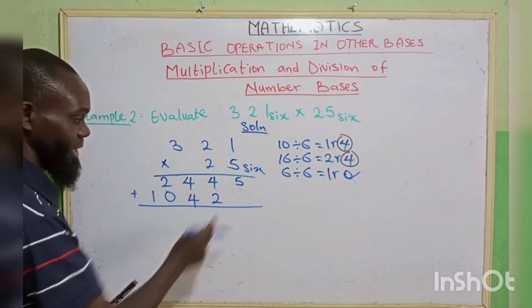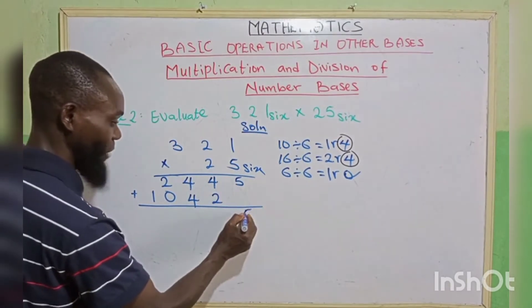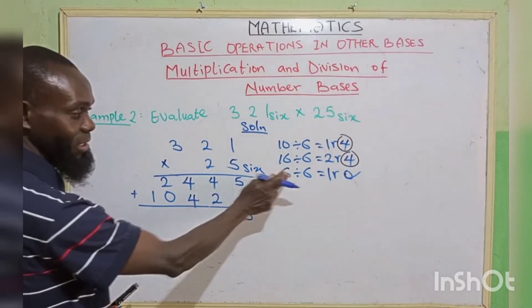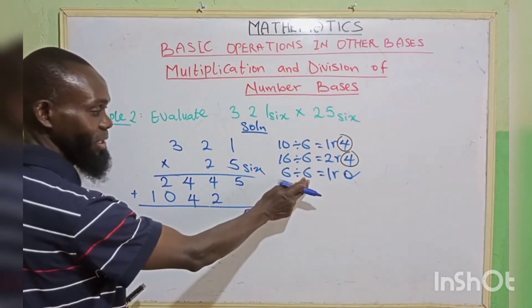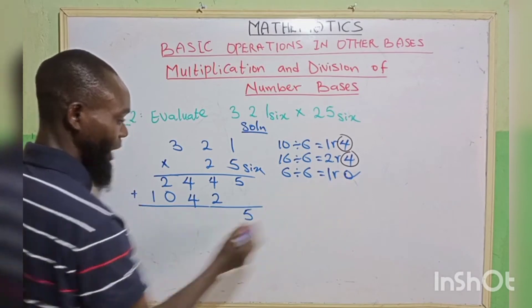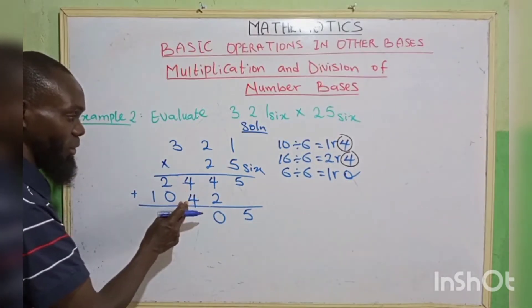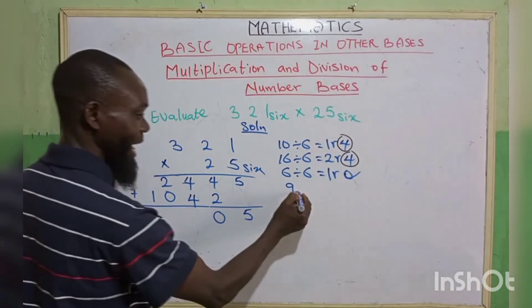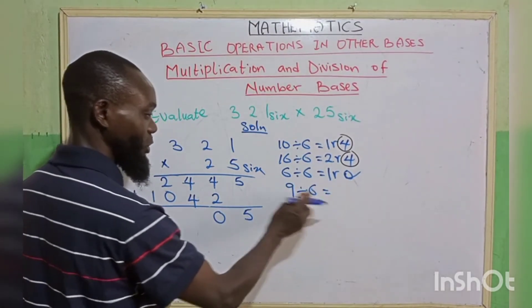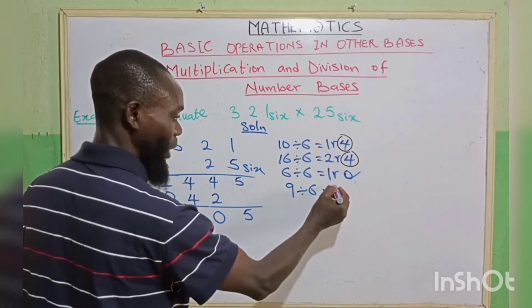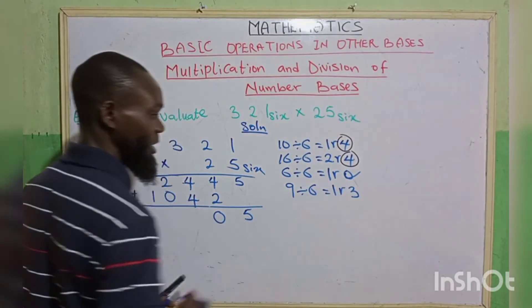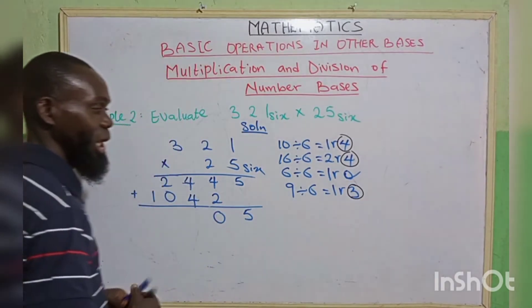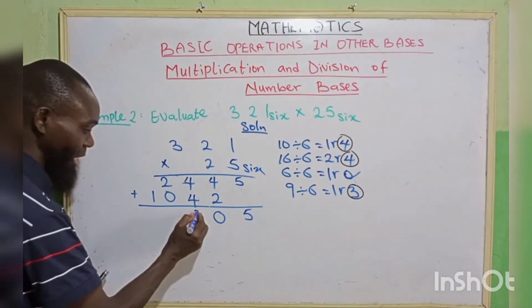Don't forget it's in base 6. There's no more number here, you take your 5 down. 4 plus 2, that is 6. It's up to your base 6. Then 6 divided by your base gives 1 remainder 0. You write your remainder 0, carry 1. 4 plus 4, that is 8. 8 plus 1 you've carried, that is 9. 9 divided by 6, 6 goes in 9, we are going to have 1 remainder 3. Here you write your remainder 3, and you carry your 1. So let's write our 3, carry 1.